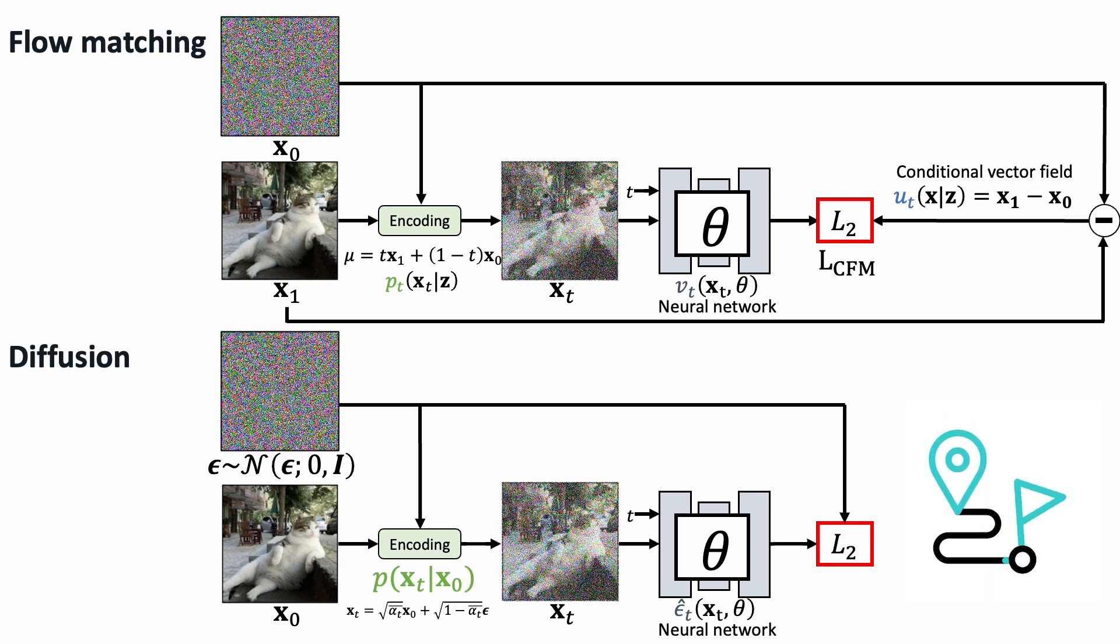It cannot generate a pure Gaussian noise within a finite number of forward diffusion steps. The flow matching framework focuses directly on moving samples from a base to a target distribution, and regress the flow in between. Flow matching keeps the essence of diffusion models, but removes the unnecessary restrictions of the forward diffusion process.